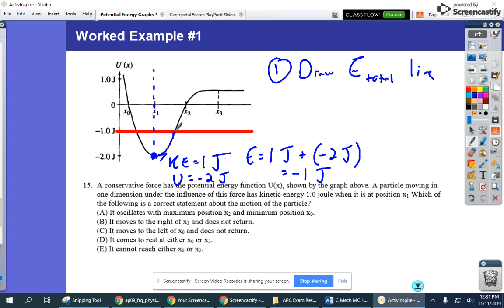And once it reaches negative 1 joule of potential energy, then all of its energy will be potential, no kinetic, and it'll kind of come back. So it'll actually just bounce back and forth between these two points. So let's take a look at what it says. A, it oscillates with a maximum position x2 and a minimum position x0.